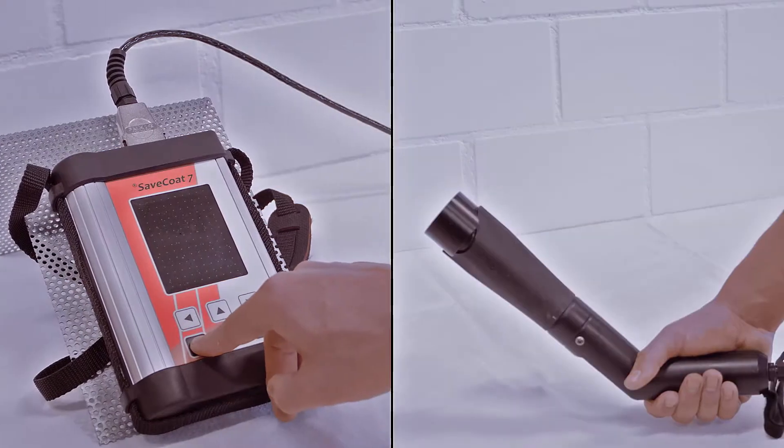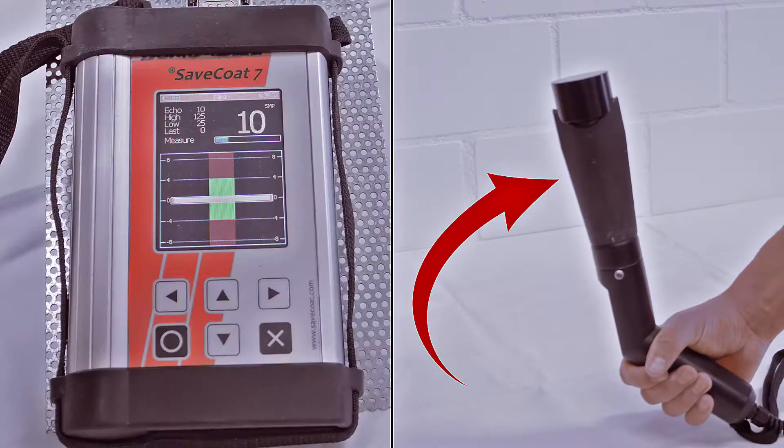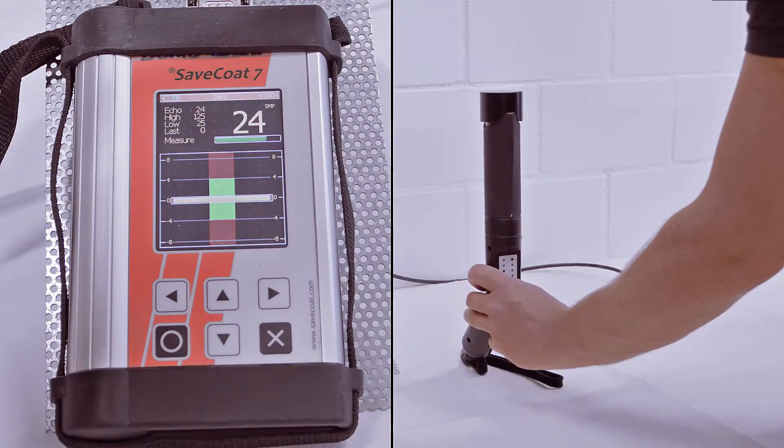First you switch on the unit, hold the pistol gun in an upright position and do the zeroing.